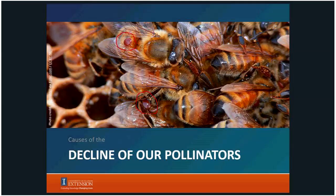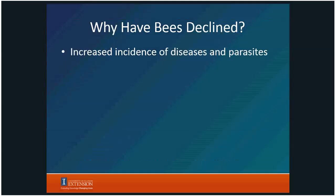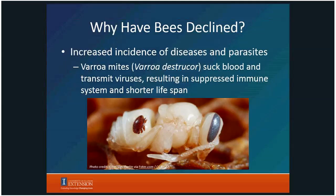Why have bees declined? One of the major reasons is varroa mites — Varroa destructor. If a bee were human-sized, a varroa mite would be about the size of a dinner plate on your body, sucking your blood, reducing your immune system, transmitting viruses, and resulting in a shorter lifespan. This picture shows a varroa mite on a honeybee nymph. Remember that there are multiple factors that have caused this decline — it's kind of a perfect storm.